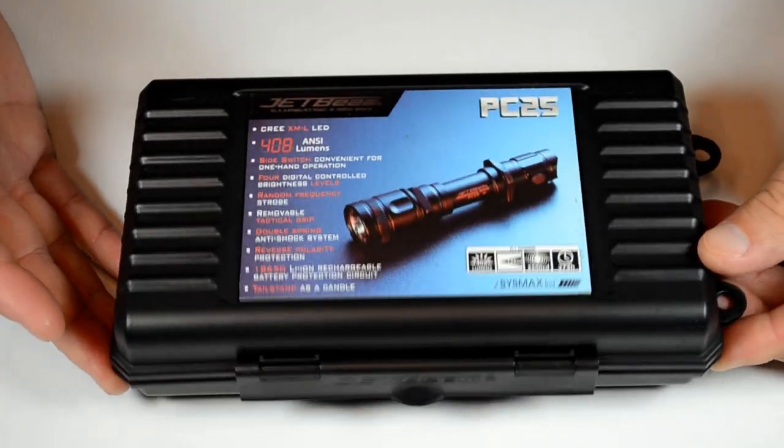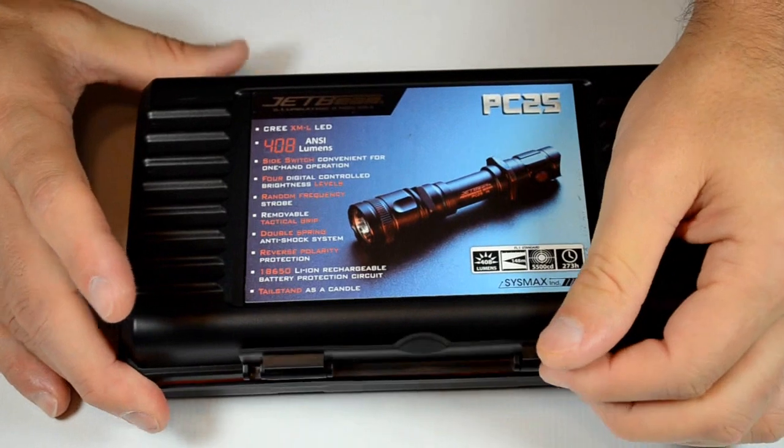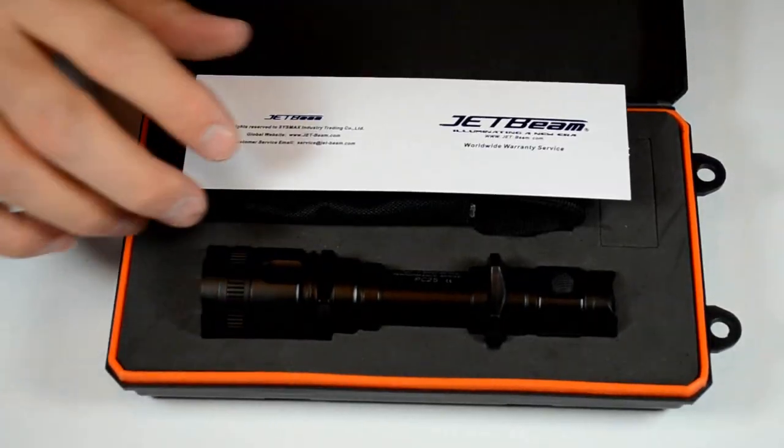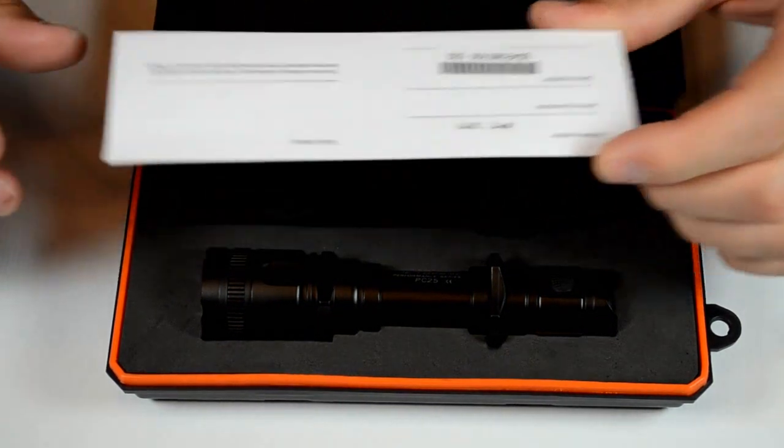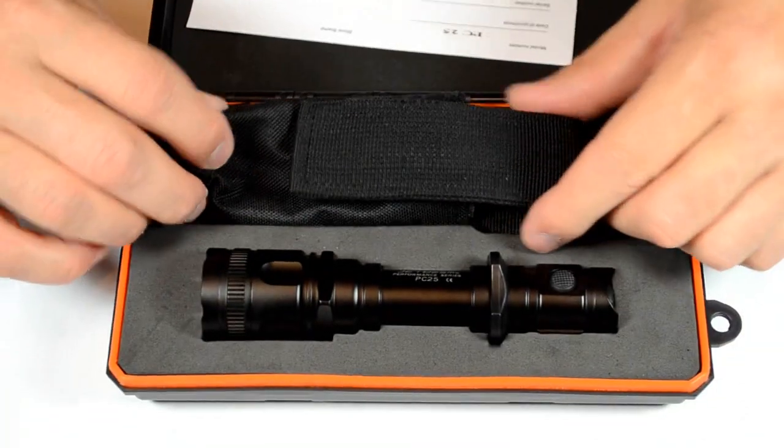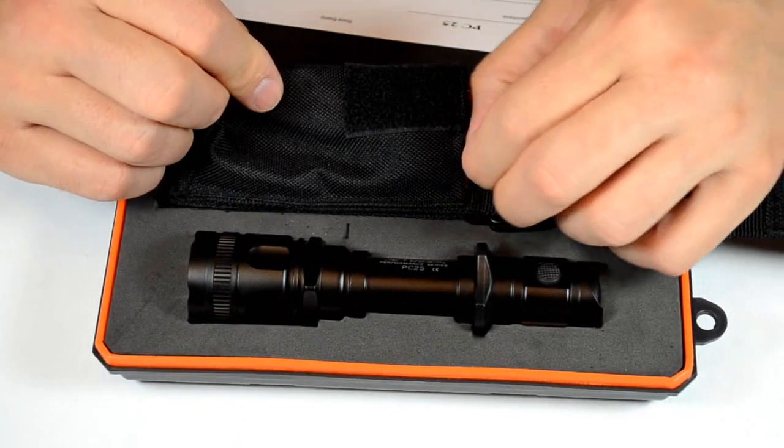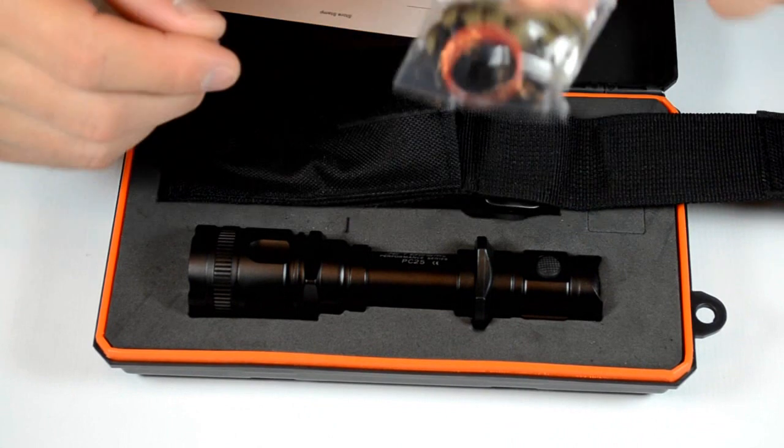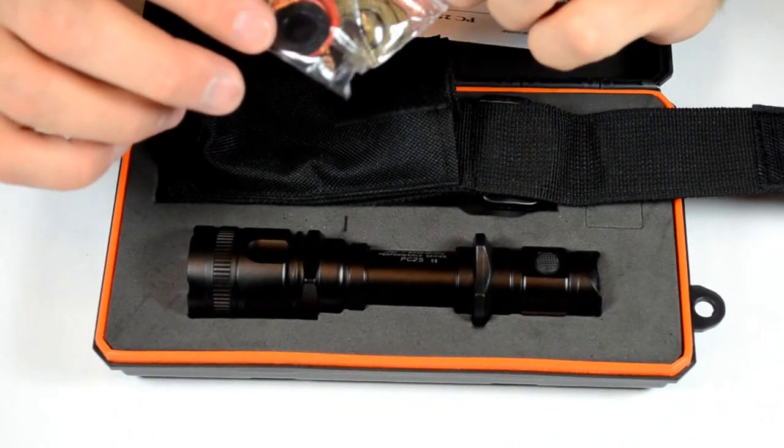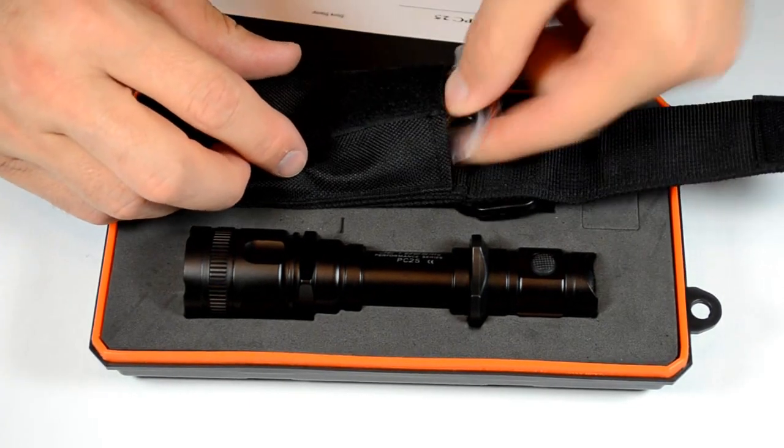You can see it comes in a nice hard case. It comes with just about everything that the normal JetBeams do: a warranty card, the light itself, a nice holster and the normal accessories - a nice lanyard, some extra tail cap switch covers, and some nice O-rings.